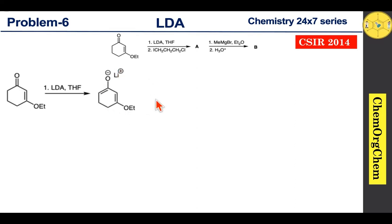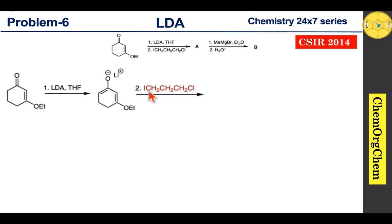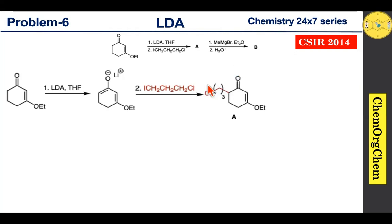This enolate ion in the next step reacts with the electrophile. Now closely look at this electrophile — it has both an iodine group and a chloro group. However, iodine attached to carbon is more reactive compared to the chlorine counterpart. Therefore, the enolate readily reacts with that carbon through an SN2 reaction mechanism, which produces the corresponding product. So this is product A.